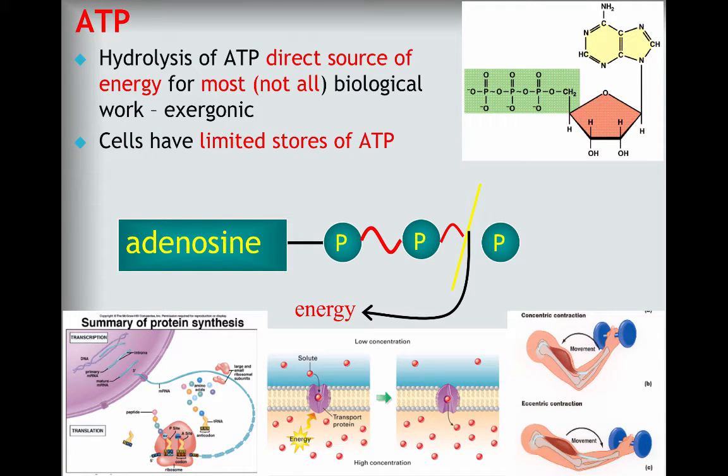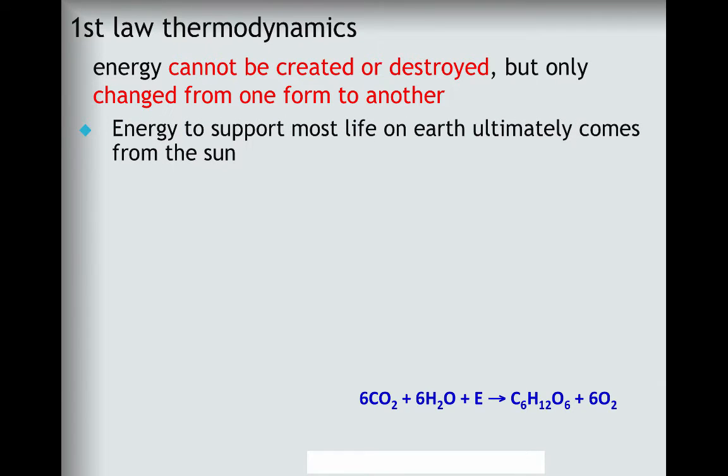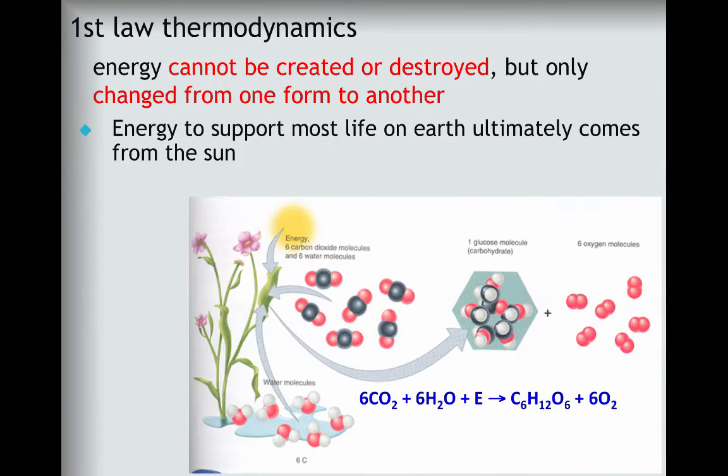Cells have limited stores of ATP, and for that reason, we need to continually replace the ATP that's used. The first law of thermodynamics tells us that energy cannot be created, but can be changed from one form to another. The energy to support most life on Earth ultimately comes from the sun. Plants have the ability, through photosynthesis, to convert solar energy into chemical energy of large complex biomolecules, like the monosaccharide glucose.